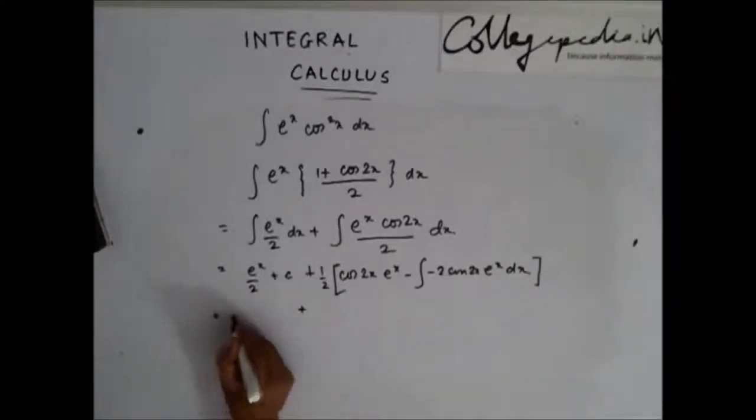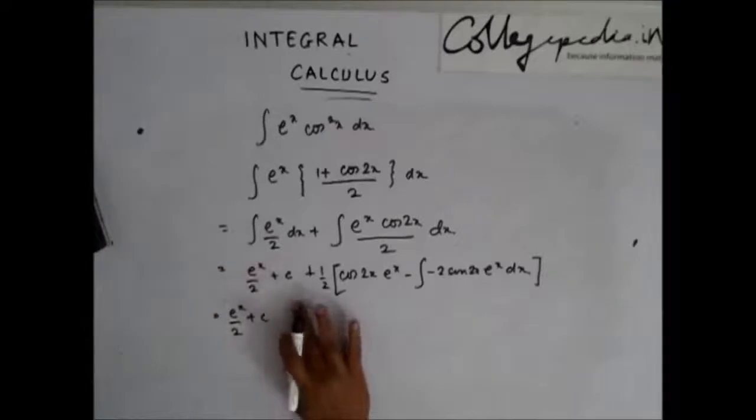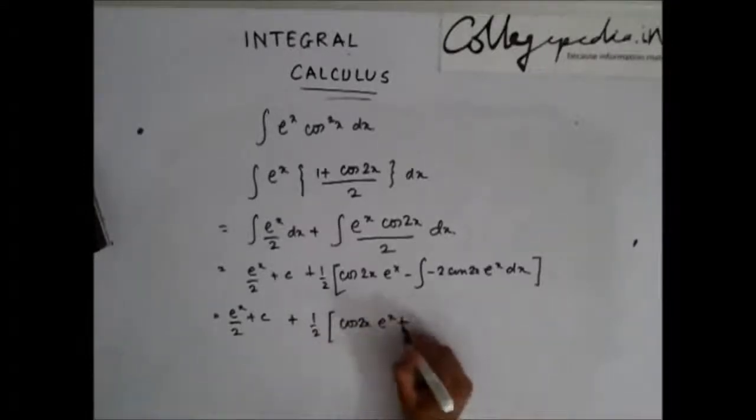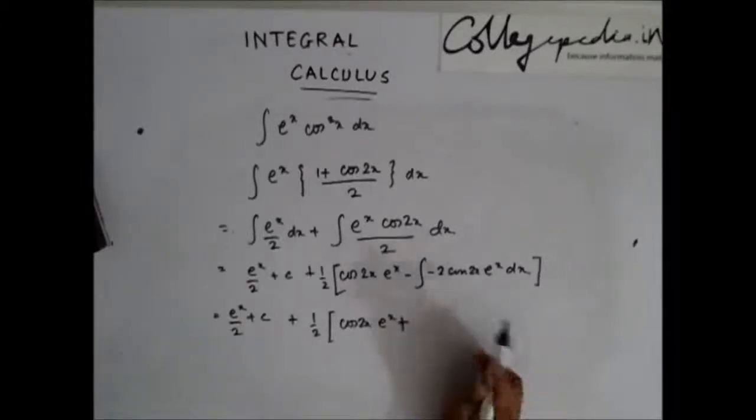So I will get e to the power x by 2 plus c plus half of cos 2x e to the power x plus this one: integration of 2 sin 2x e to the power x.